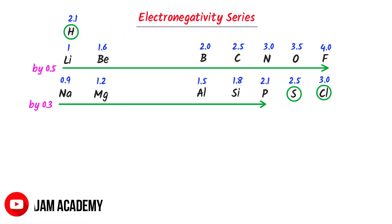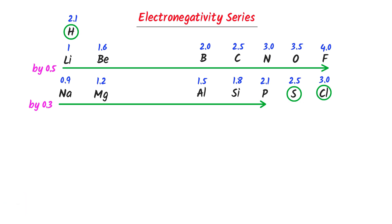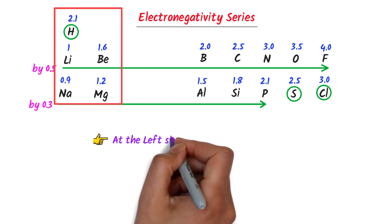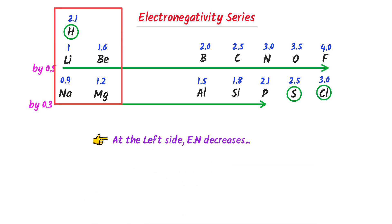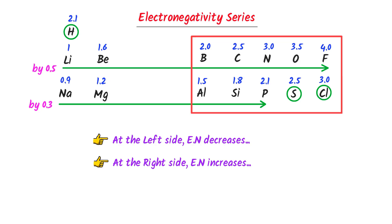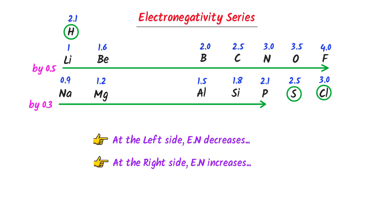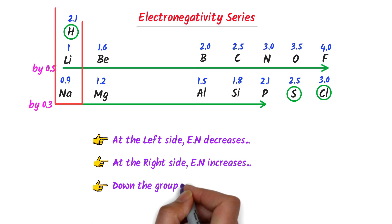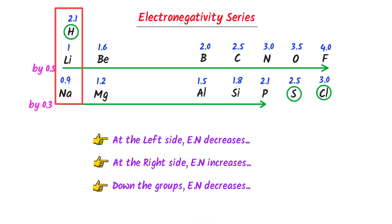This is the electronegativity series in the periodic table. From this series we conclude: at the left side of the periodic table, electronegativity decreases; at the right side, electronegativity increases; down the group, electronegativity decreases; and fluorine is the highest electronegative element in the periodic table.